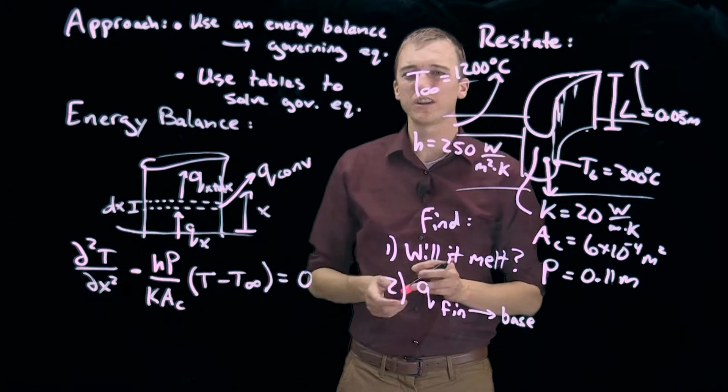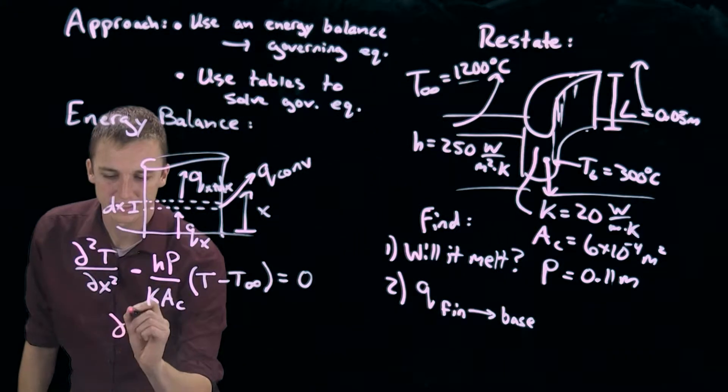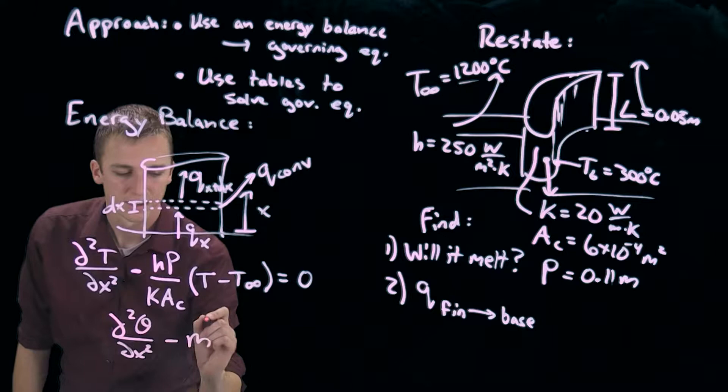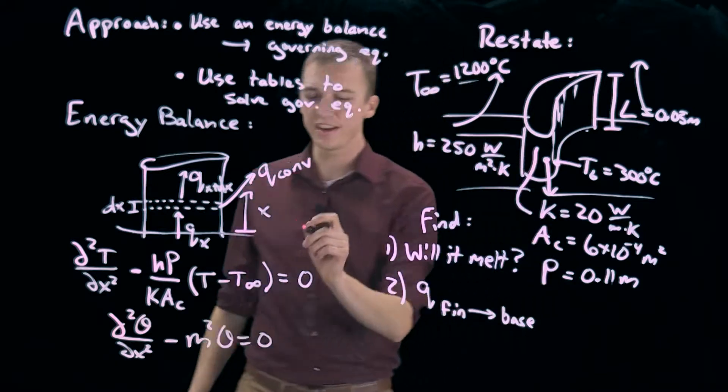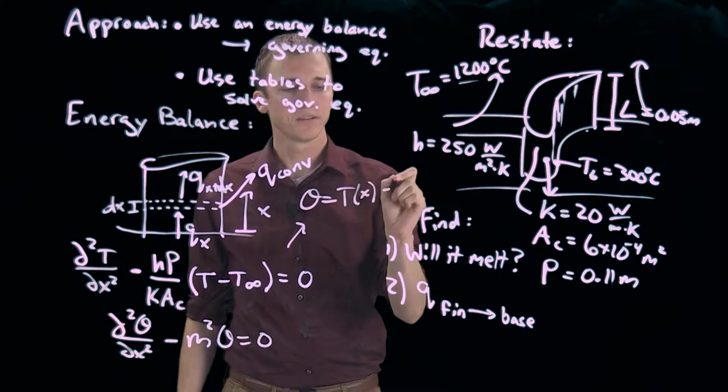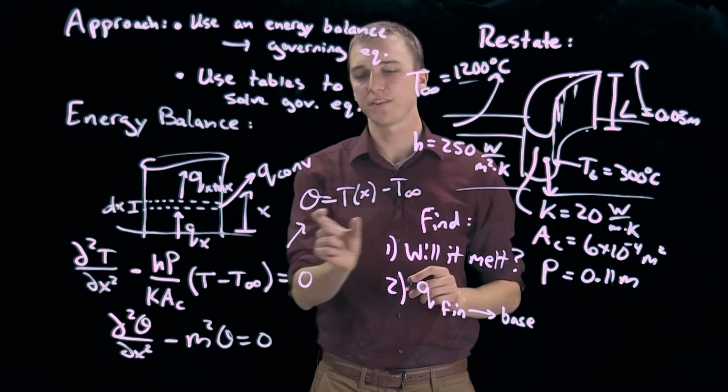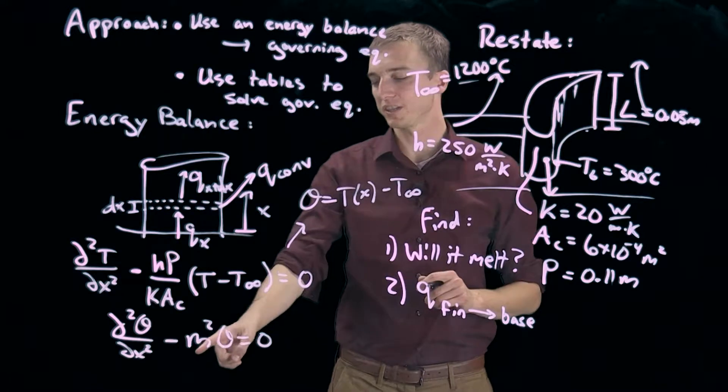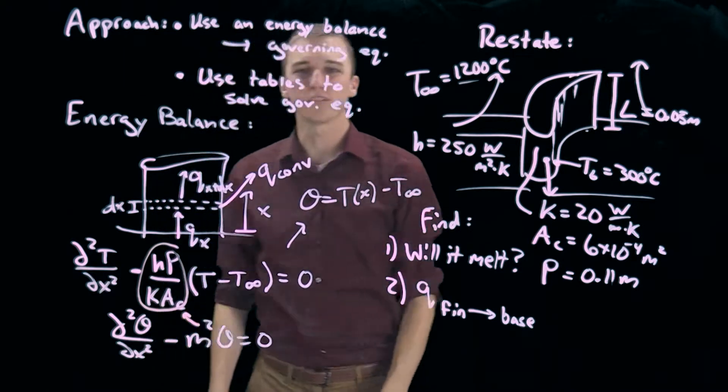This is a little hard to solve as is. So we're going to rewrite like this: d squared theta dx squared minus m squared theta equals zero. We just let theta be equal to tx minus t infinity. We plug that into each t here. The second derivative, the t infinity would drop out. We're left with this expression. Now m squared is simply equal to hp over kac.